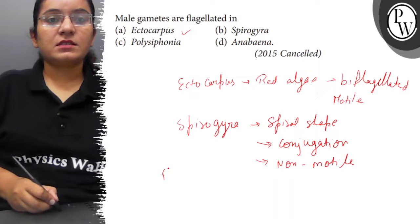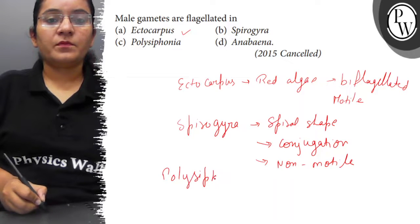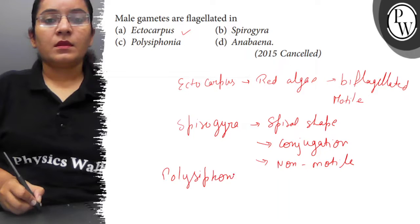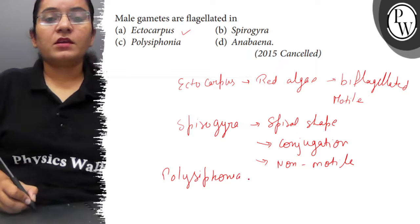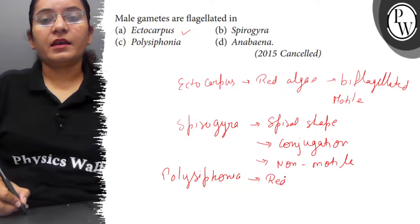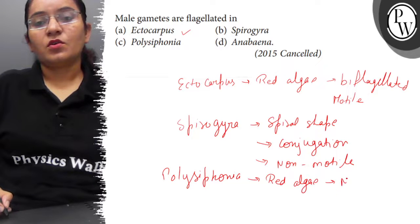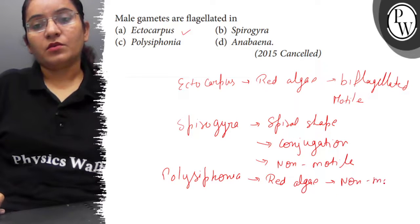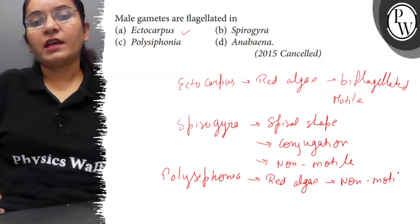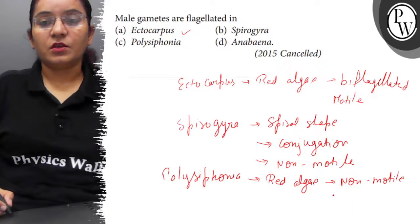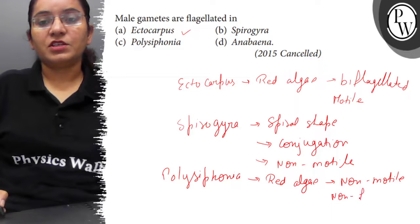Next is Polysiphonia. Polysiphonia is again a red algae and it produces non-motile gametes. Since they are non-motile, there will be no flagella — so non-flagellated.